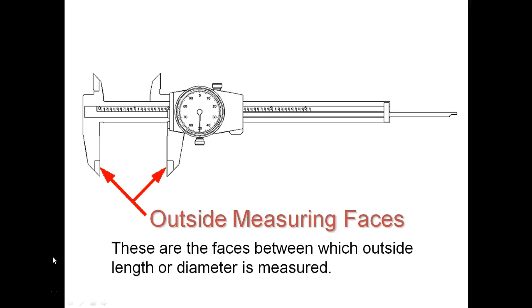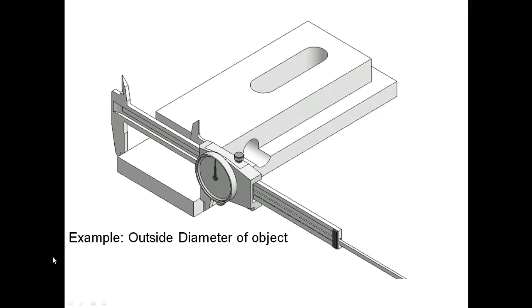The first one here is outside. This is the common one you'll be using and you have these two jaws and as you slide it open you'll see those jaws opening up and you could use those to clamp down. For example, clamp down onto an area from outside to outside and that will give you your outside diameter.